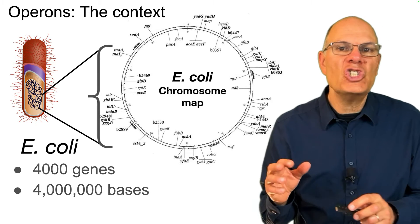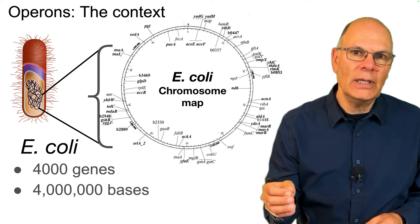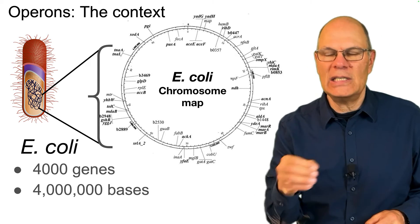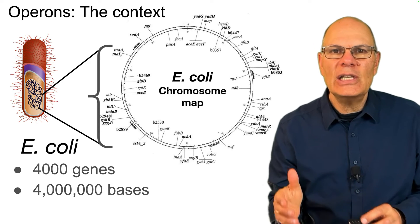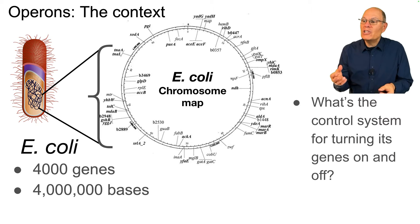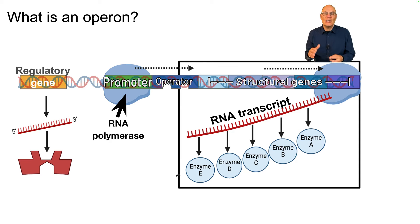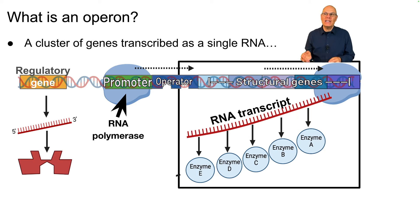The overall genome of E. coli consists of about 4 million base pairs — A's, T's, C's, and G's. This leads to a question of regulation: what's the control system for turning its genes on and off? Let's start by responding to this very general question: what is an operon?